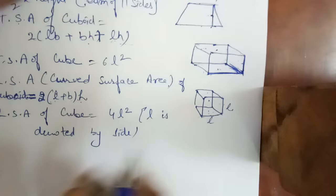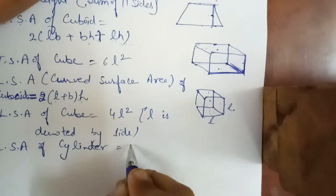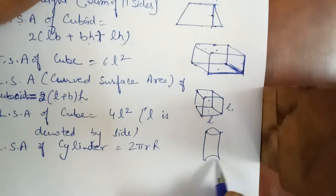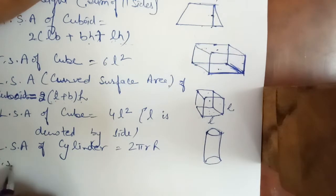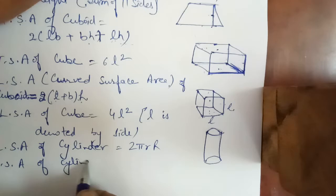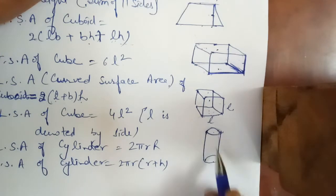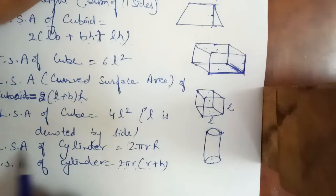And last formulas are lateral surface area of cylinder. Cylinder का lateral surface area है 2πrh. Cylinder is in the form of a tube — tube light होती है, उस form की. 2πr circumference of circle हो गया और h height हो गई. एक और है total surface area of cylinder — उसका formula है 2πr into (r plus h). दो circles हैं, दोनों का area πr² plus πr² = 2πr², और lateral surface area 2πrh add करने पर 2πr common आता है, so 2πr(r + h).